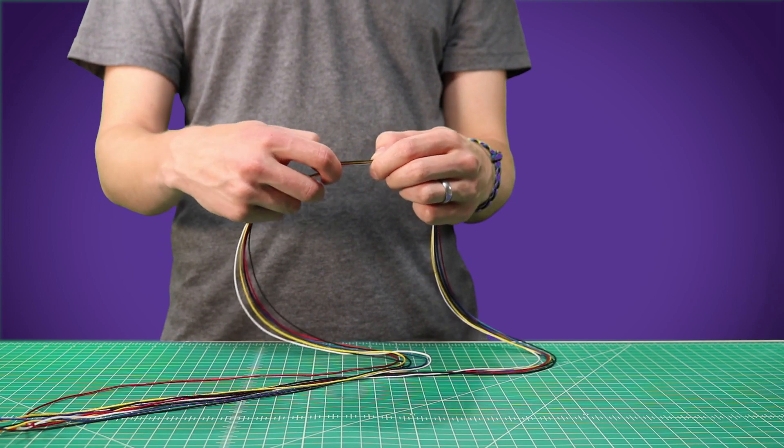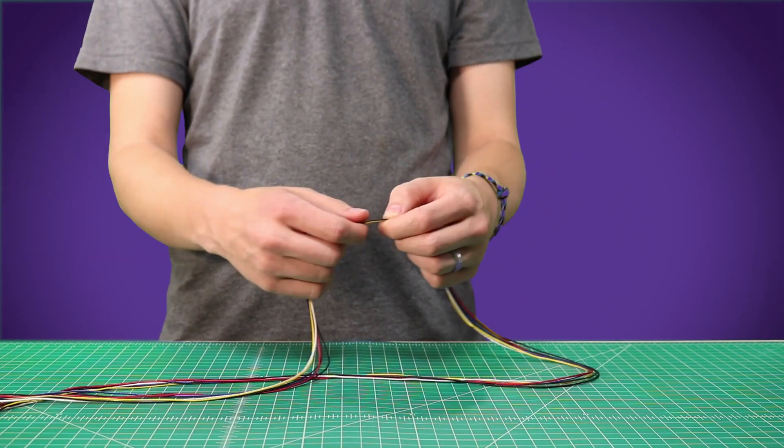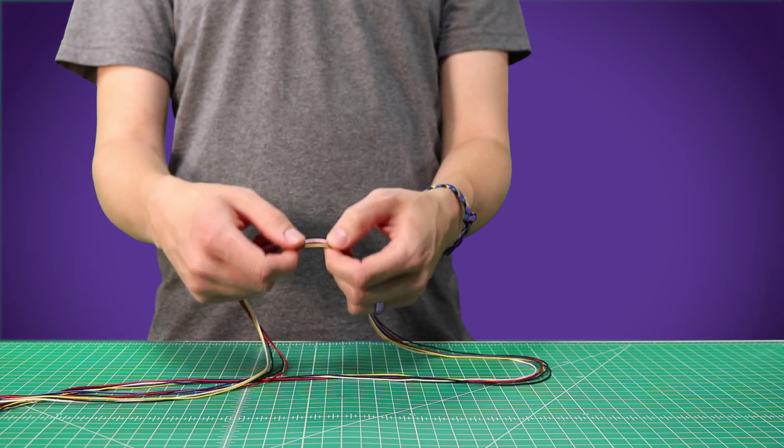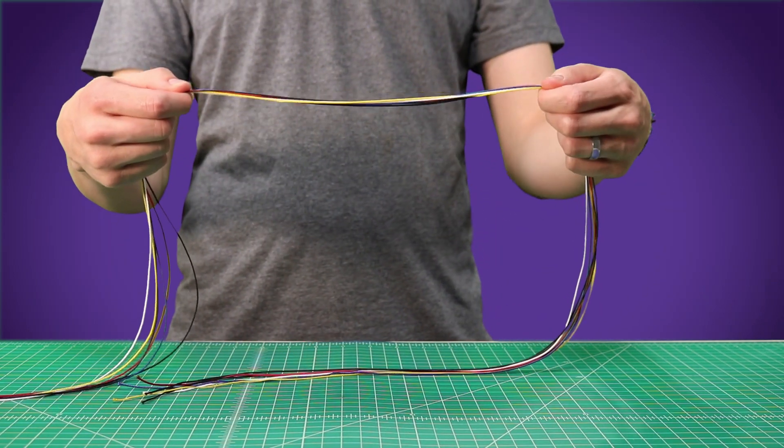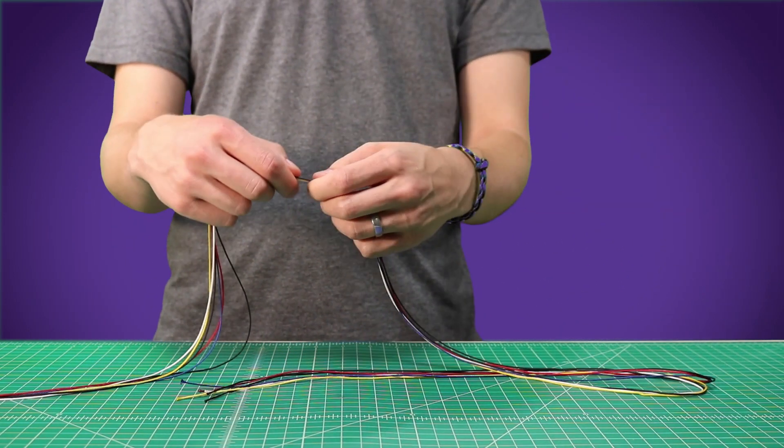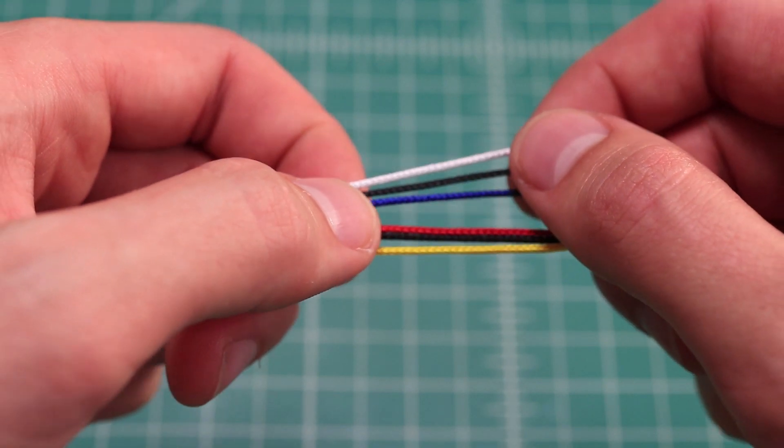So for this project, you're going to need six pieces of microchord in five different colors. I've cut them each to about five feet long to make sure that I have enough. I've got two black, and then one each of white, blue, red, and yellow.